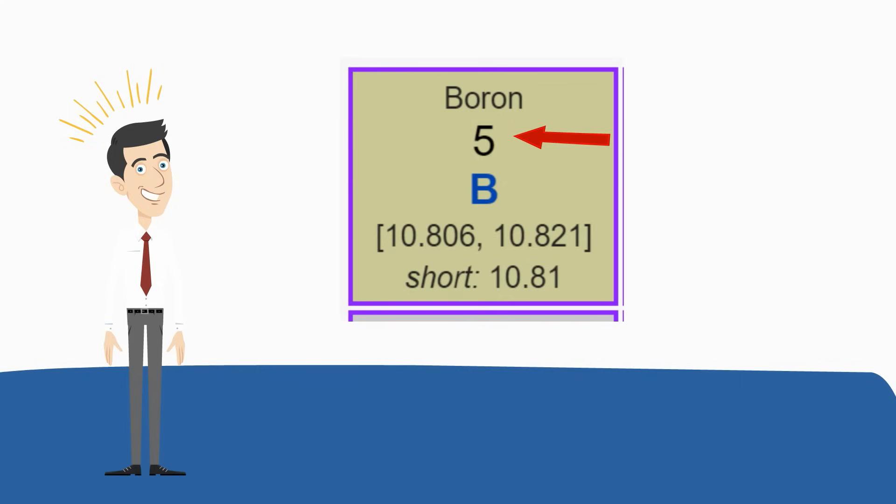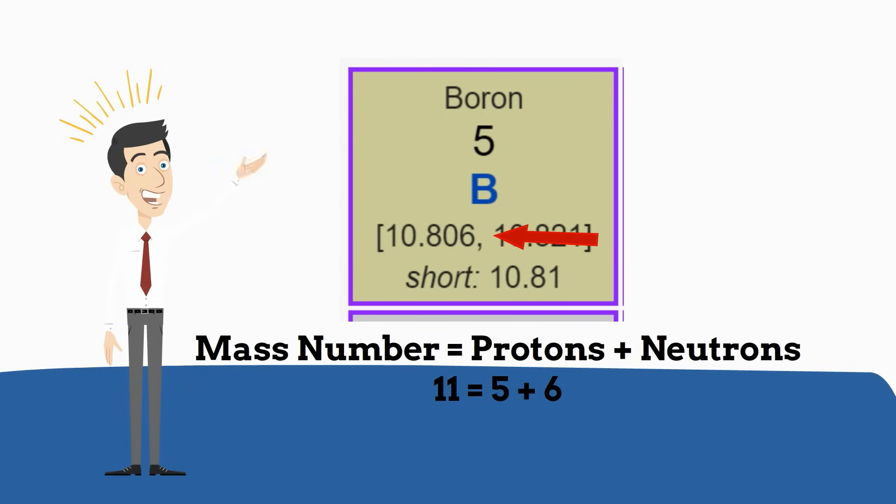It has an atomic number of 5, so it has 5 protons. So it will have 5 electrons because it is neutral in charge. It has an atomic weight of 10.806, so I will round that to 11. Then 11 equals 5 plus 6, so it has 6 neutrons.